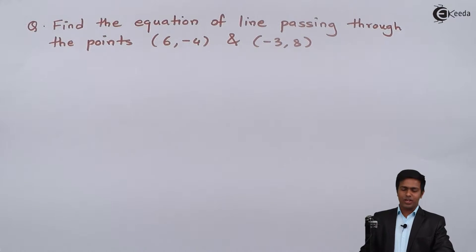Hello everyone. In this problem we have to find the equation of a line passing through the points (6, -4) and (-3, 8).